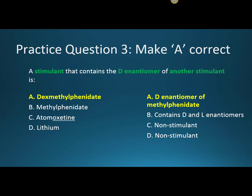Question three, make A correct. A stimulant that contains the D enantiomer of another stimulant is A, dexmethylphenidate. Molecules are often made of two enantiomers — an enantiomer is when a molecule has a mirror image of a different molecule. The dextro enantiomer of methylphenidate is more pharmacologically active, and that is the only component of dexmethylphenidate. B is incorrect because methylphenidate contains the active D enantiomer and also the less pharmacologically active L enantiomer. C and D are incorrect because those are non-stimulant medications.